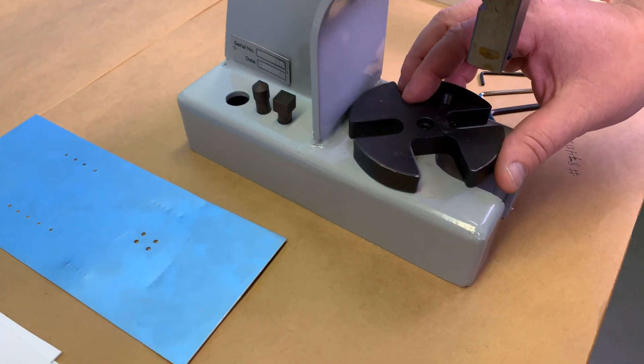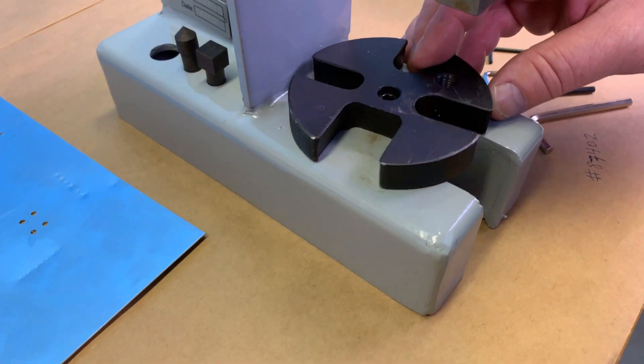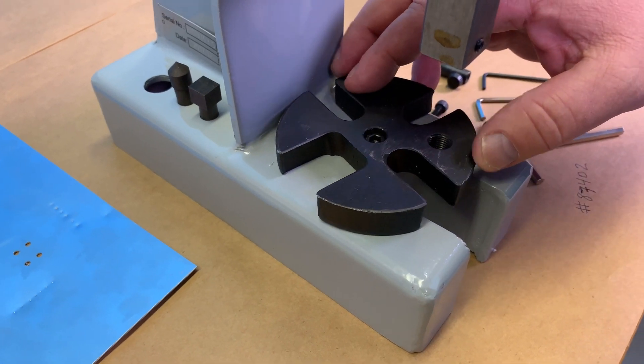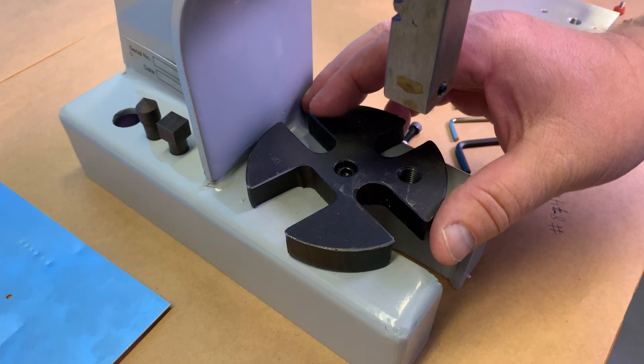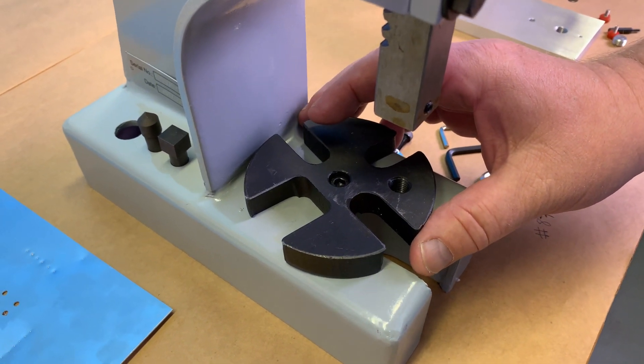Secondly, our table rotates just like all the other tables out there on arbor presses. But ours can also offset 360 degrees up to 3/16ths of an inch from center.